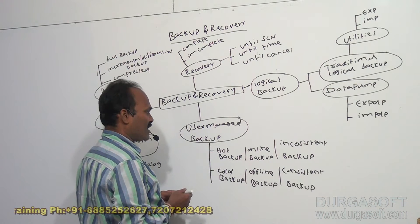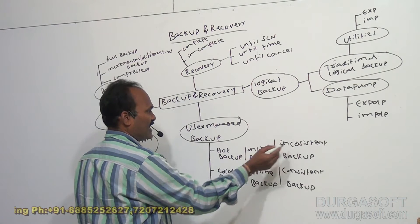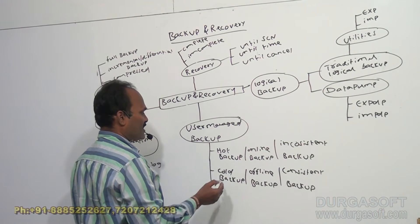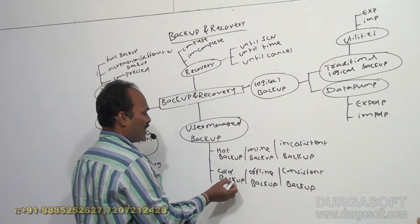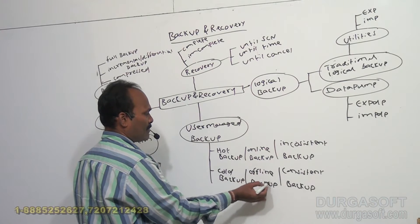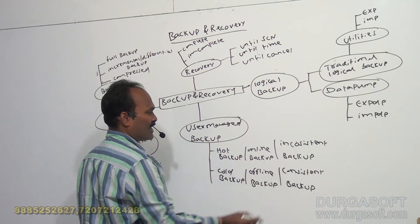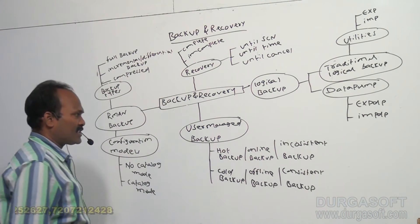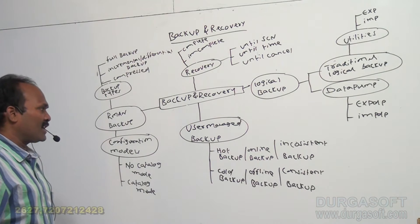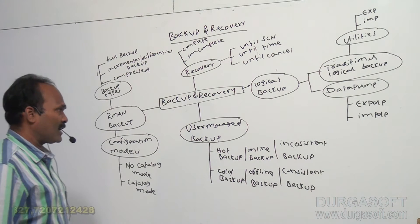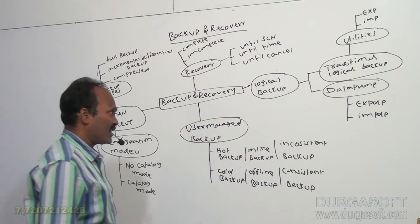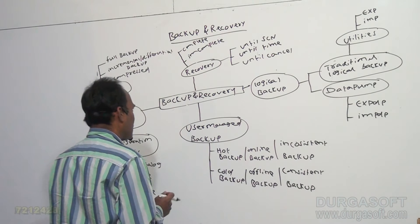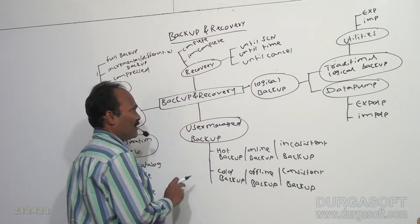Hot backup is also called as online backup or inconsistent backup. Cold backup is also called as offline backup or consistent backup. What is consistent backup and what is inconsistent backup will be discussed later. First, I will discuss the types of backup mechanisms.